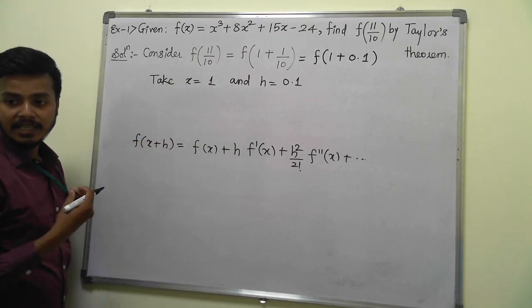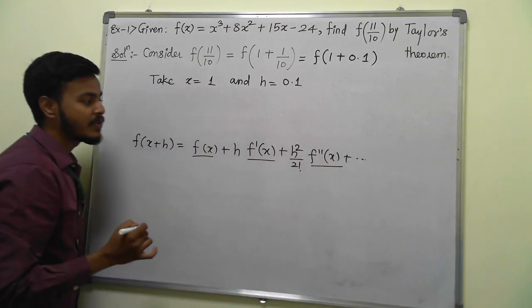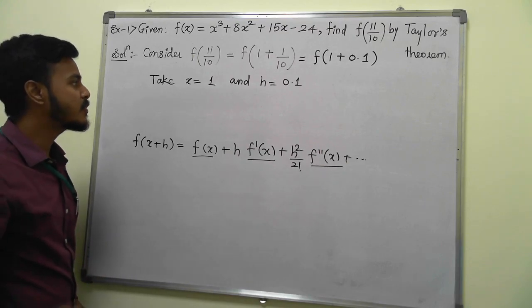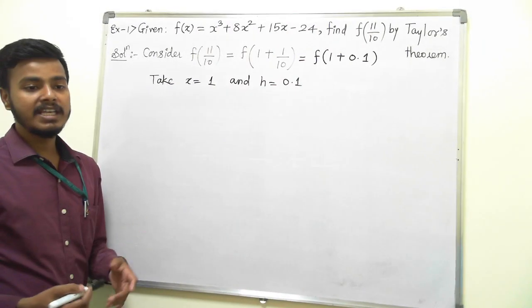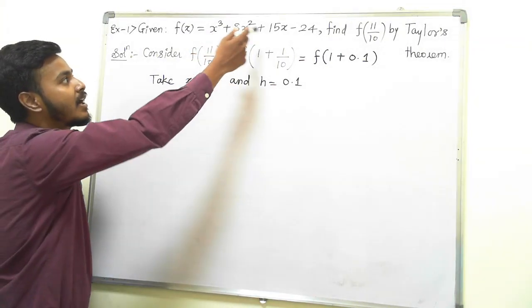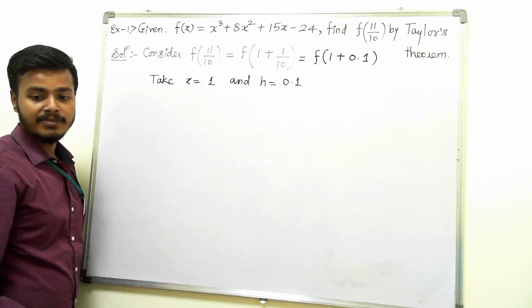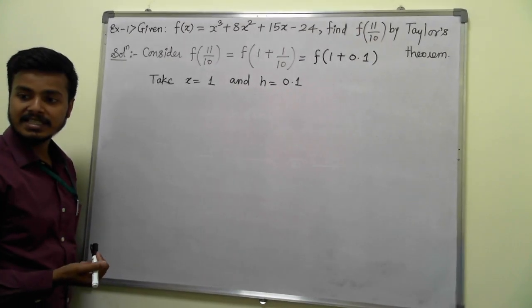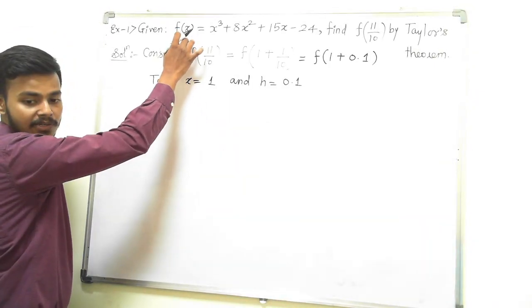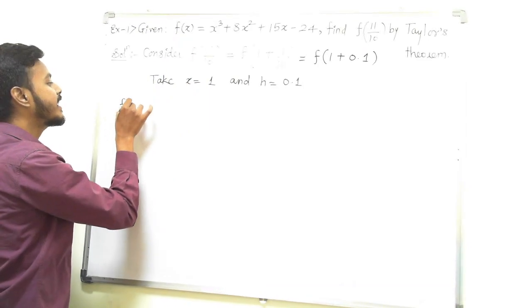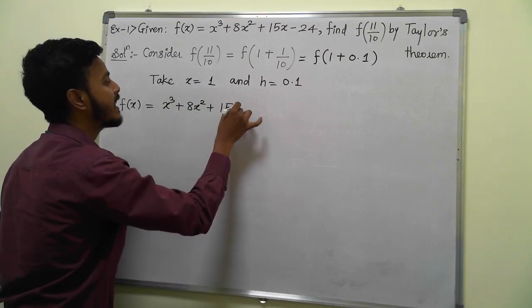To find this, I need the function and its derivatives. The first thing you need to do in all Taylor series and Maclaurin series problems is write down the given function and find as many derivatives as you can. For polynomials, after degree 3 it becomes 0. For other functions like sine, cosine, log, or tangent, find at least 3 to 4 derivatives. So let's write f(x) = x³ + 8x² + 15x - 24.